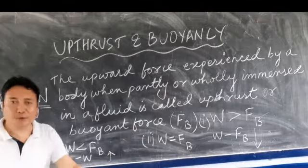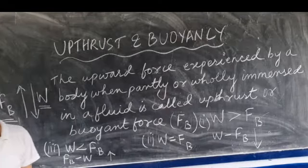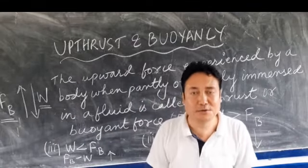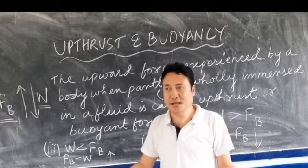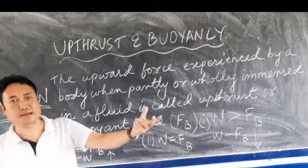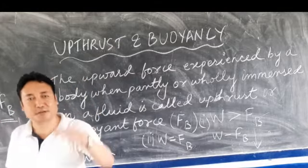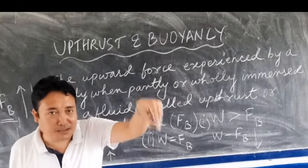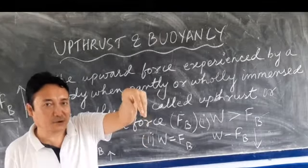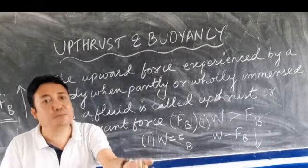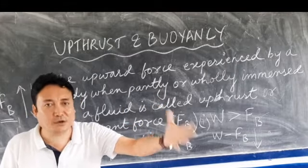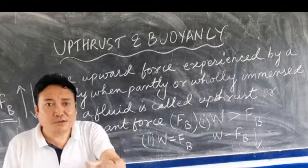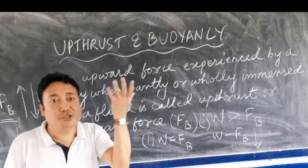Now let us come to the properties of upthrust. Property one: the larger the volume of the body submerged, the greater the upthrust. If you take a small cork and immerse it in water, the upward force is less. But if you take a larger body and immerse it under water, the upthrust will be more — more force will be exerted on your fingers pushing your hand upward.